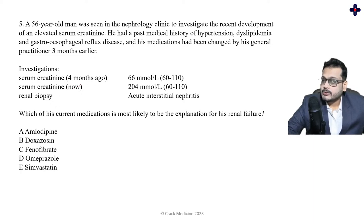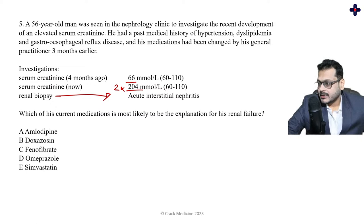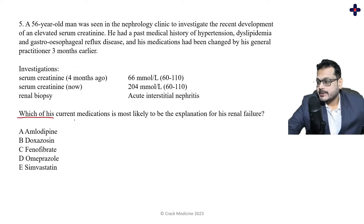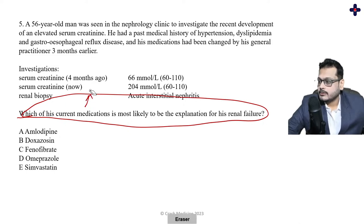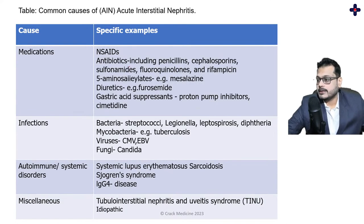Question 5: a 56-year-old man seen in nephrology clinic with recent development of elevated serum creatinine. He has a history of hypertension, dyslipidaemia, and GORD. His medications were changed three months earlier by his GP. Serum creatinine from four months ago was at the upper limit of normal. The question asks which current medication is most likely causing renal failure — essentially, which drug causes acute interstitial nephritis (AIN). The correct answer is omeprazole. It is one of the most commonly prescribed drugs, but AIN is one of its most important side effects.